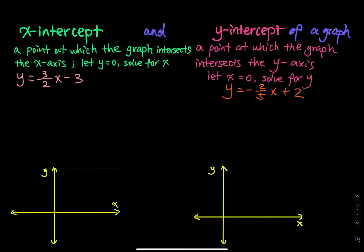The x-intercept is a point at which the graph intersects the x-axis. At that point, we let y equal to 0 and then solve for x.